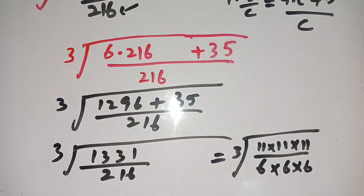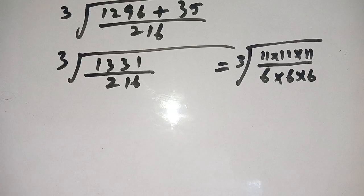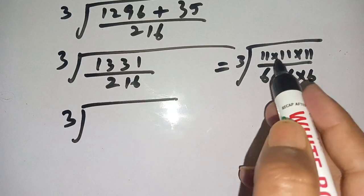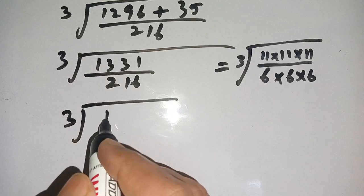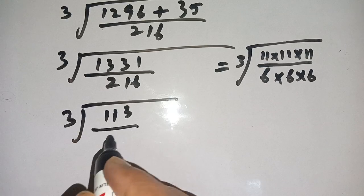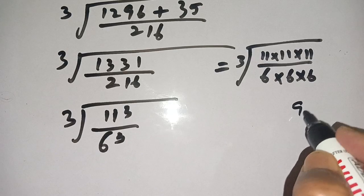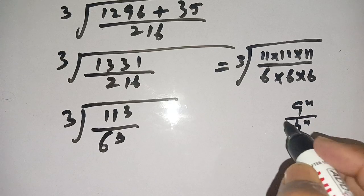Now on the next step we get cube root of 11 times 11 times 11, which becomes 11 cubed, divided by 6 cubed. And we know that if a to the power n divided by b to the power n, then it is equal to a divided by b whole to the power n.